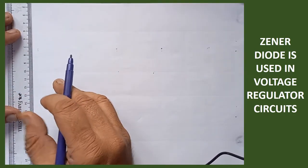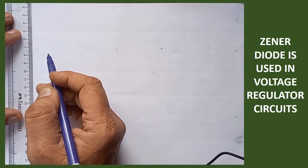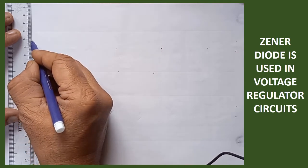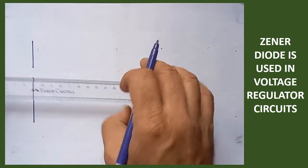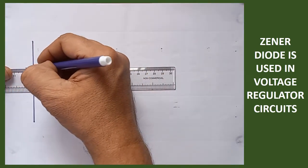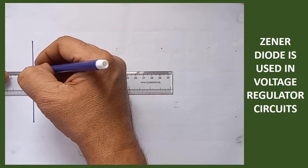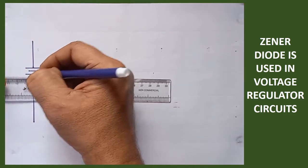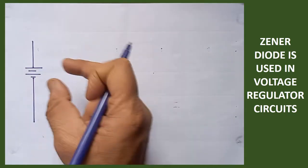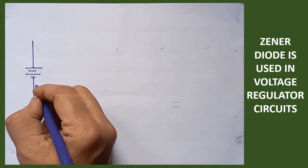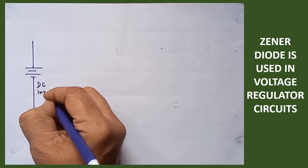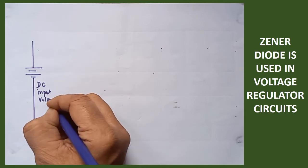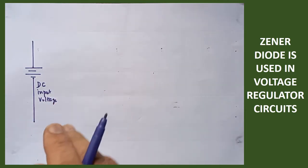First you have to draw the power supply, from which you are able to get the DC voltage as input. I will draw the DC input voltage that acts as the source — positive and negative terminals. From there you are able to get the input voltage, so we write it as DC input voltage. This is to be fed into the voltage regulator circuit.